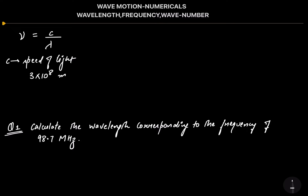The speed of light C is constant at 3 × 10⁸ meters per second. When putting the value of wavelength into this formula, always keep in mind that you have to take your wavelength in meters, because the speed of light is in meters per second. So in the formula nu = C / lambda, wavelength must be in meters.